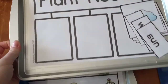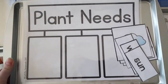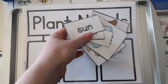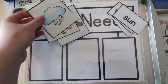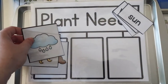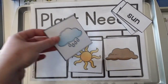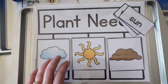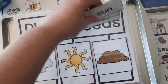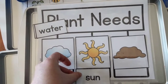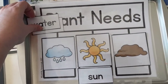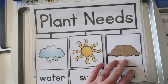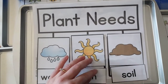The last one for plants is talking about plant needs. First, you would obviously talk to your child about what are the three things a plant needs, and then they're going to put them on the mat and match up the word. It's kind of a Montessori matchup where they match the word to the picture. So this is sun, water, and soil - these are the things that a plant needs.